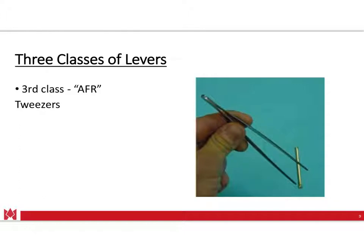The final type is the third class lever. This can be compared to tweezers, where in the direct center you have the axis point, the force on each side is the squeezing of the fingers, and the resistance is at the distal end trying to grab an object. This would be a third class lever — AFR or RFA.